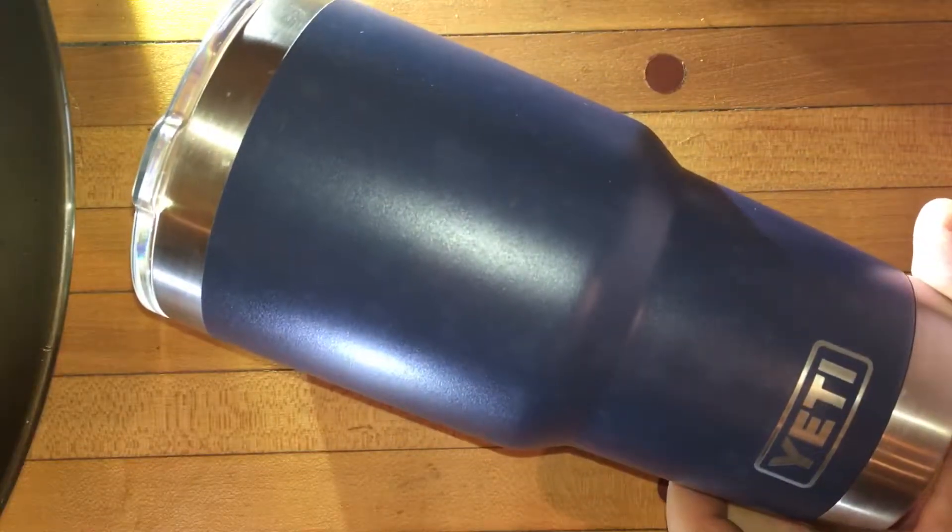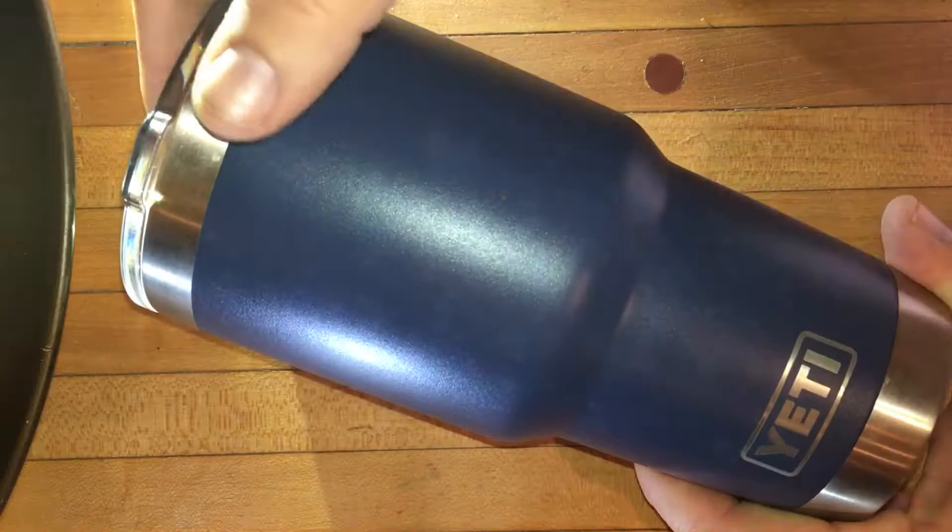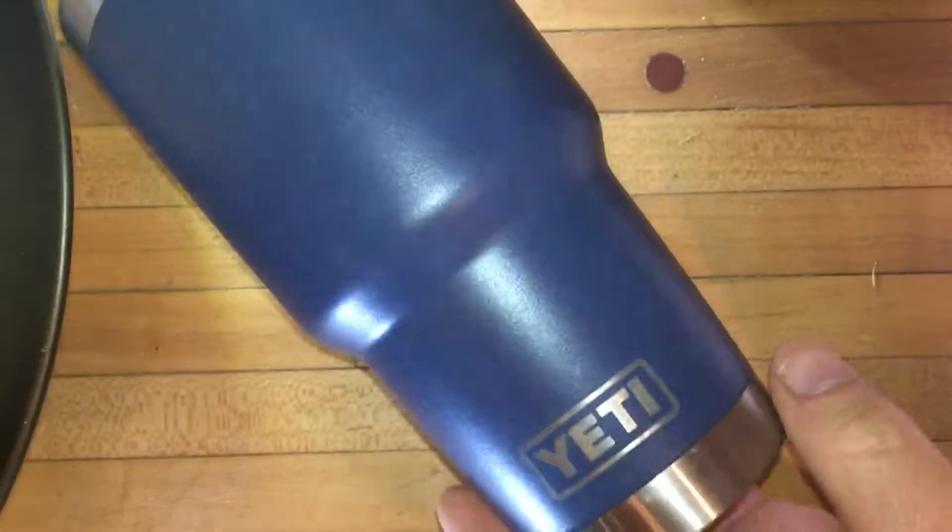Here's how I disassemble a Yeti drinking cup for washing and I'll do it in real time. First you pull the lid off. This main part is one solid piece so you just set that aside, that's ready to wash.